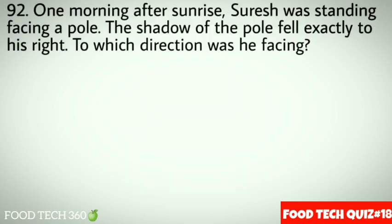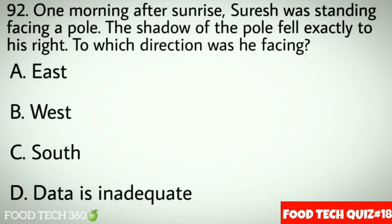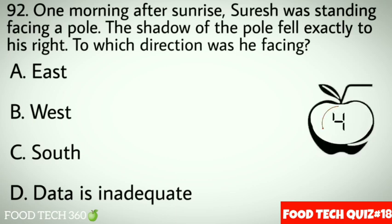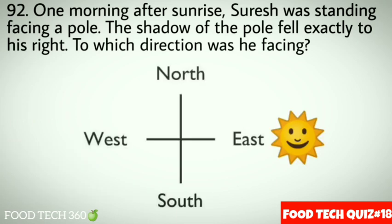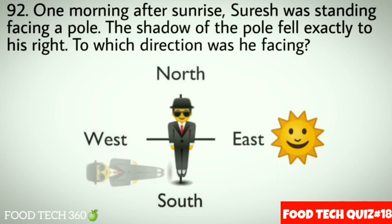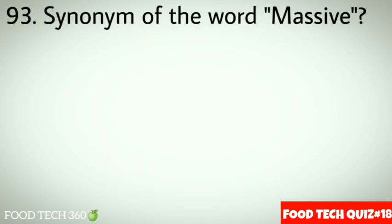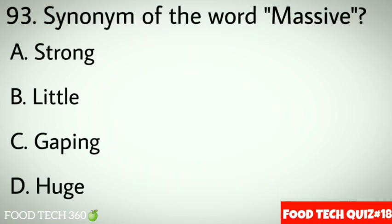Question 92: One morning after sunrise, Suresh was standing facing a pole. The shadow of the pole falls exactly to his right. To which direction was he facing? Options: A. East, B. West, C. South, D. Data is inadequate. Correct answer: C. South. Explanation: The sun rises in the east in the morning. Since the shadow falls to his right, he is facing south. Question 93: Synonym of the word 'massive'. Options: A. Strong, B. Little, C. Gaping, D. Huge. Correct answer: D. Huge.